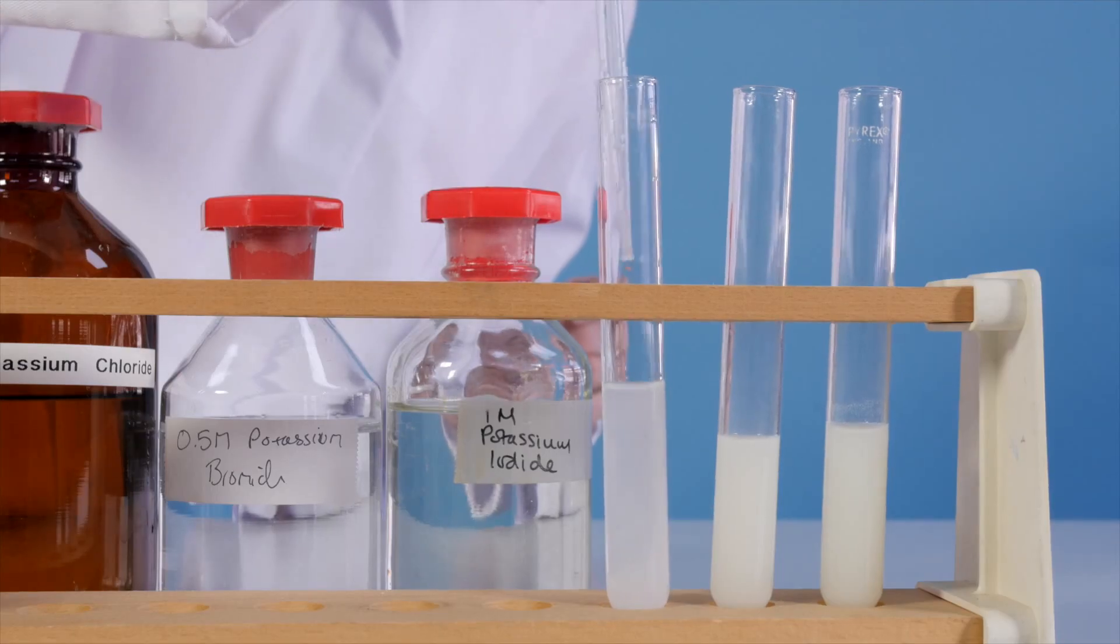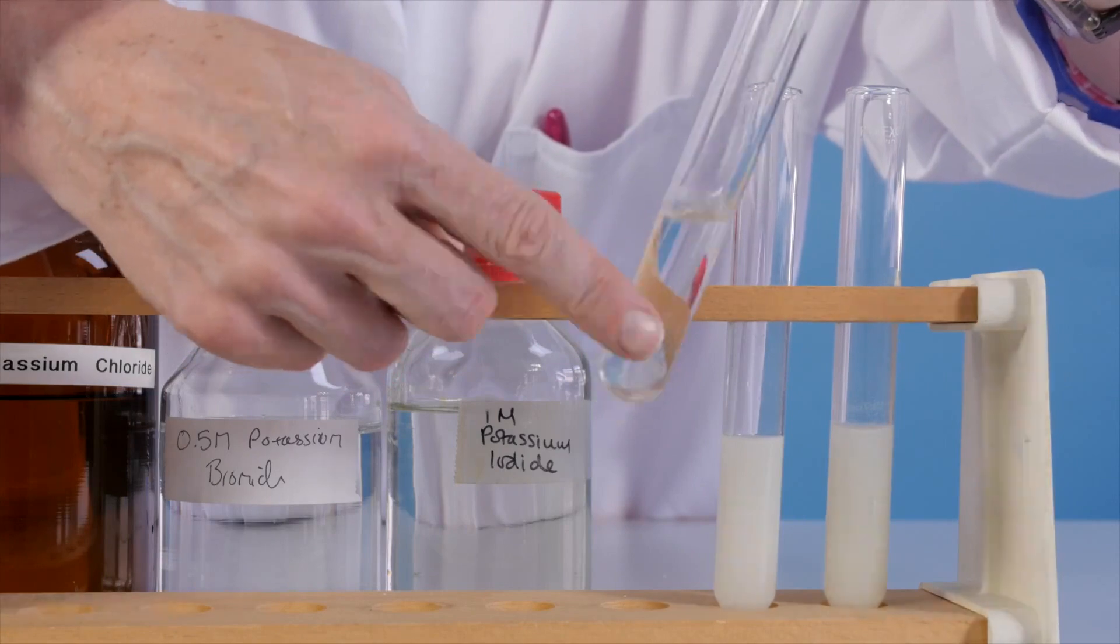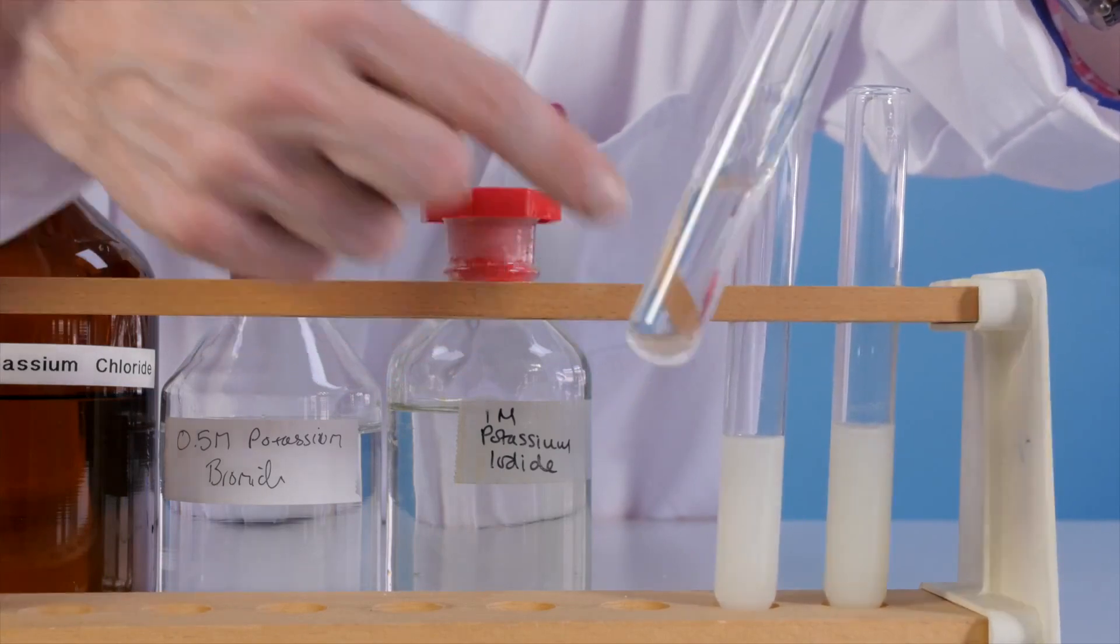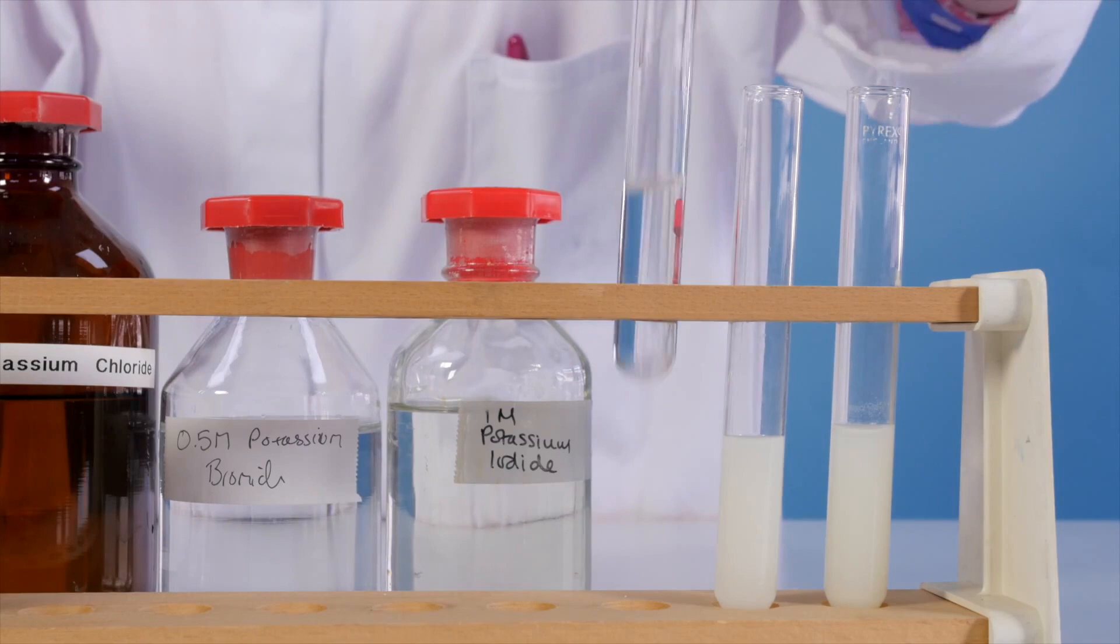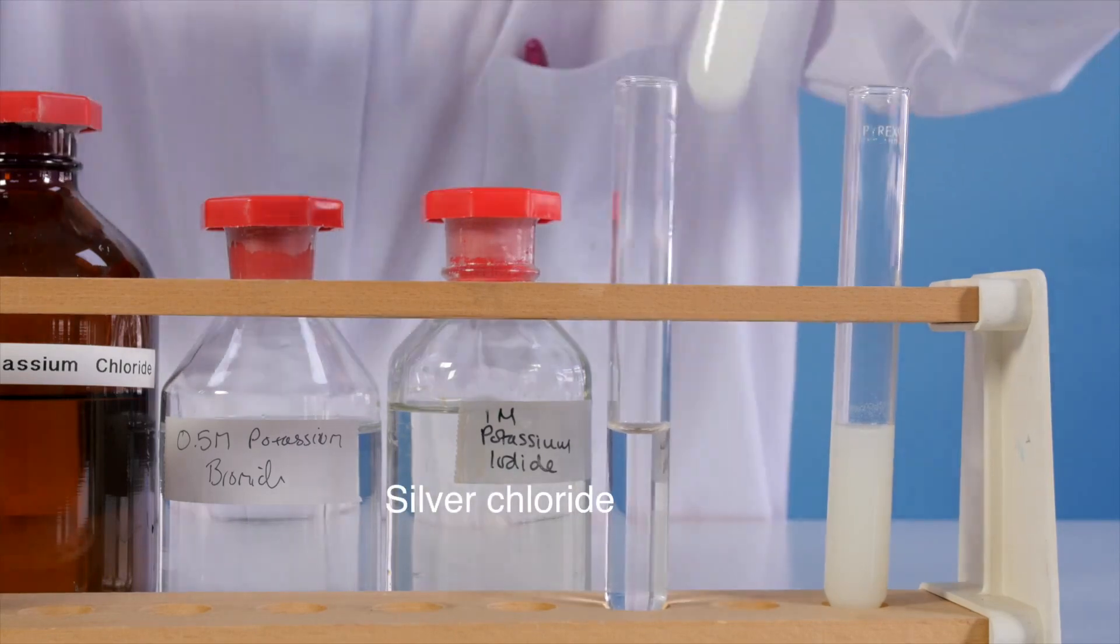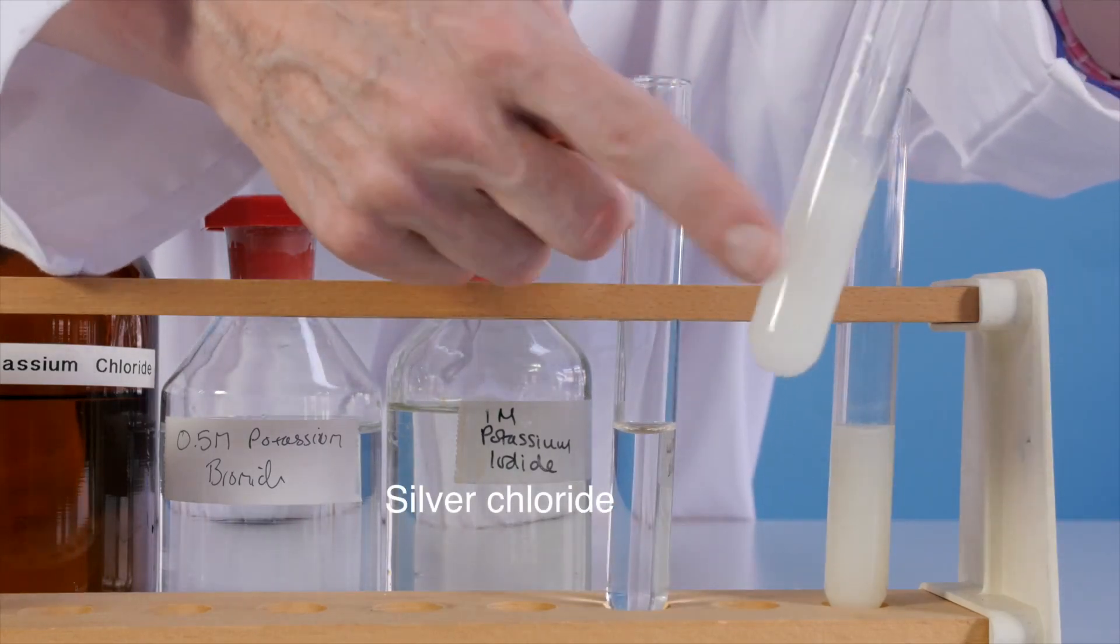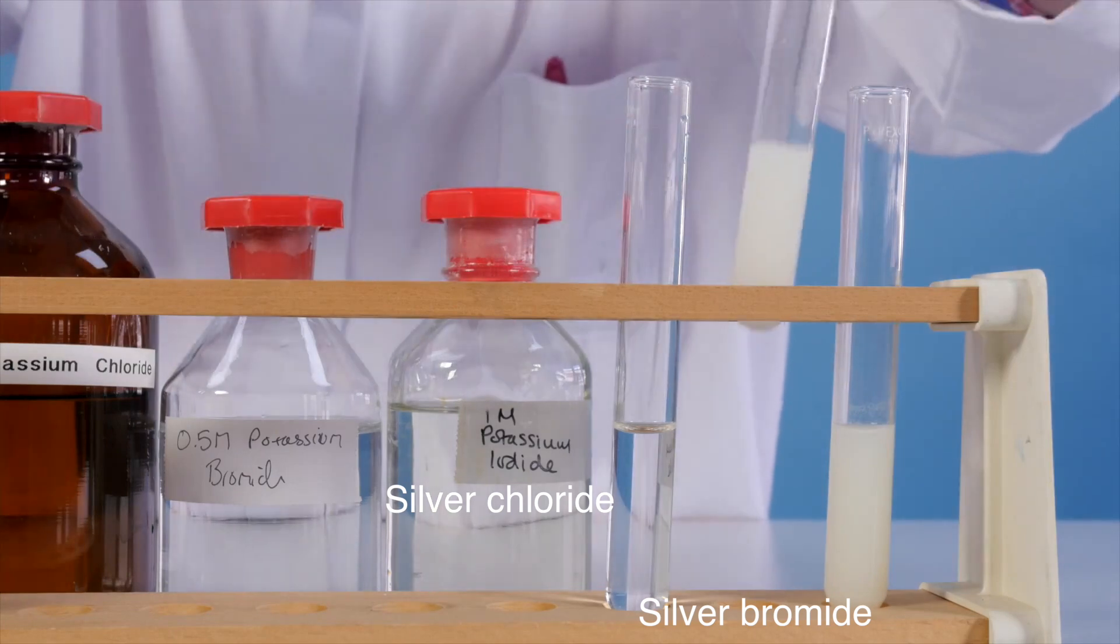It can be difficult to distinguish these colored precipitates, so next we'll add some dilute ammonia to each of the samples. The white chloride precipitate disappears, so we have confirmed chloride ions in that solution.